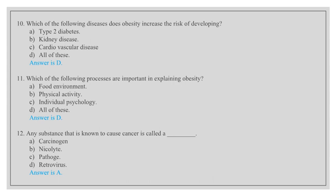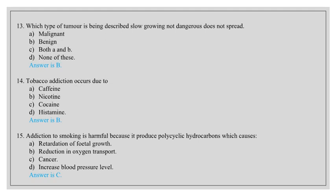Any substance that is known to cause cancer is called: carcinogen, nicolite, pathage, retrovirus. Answer is A, carcinogen. Which type of tumor is being described: slow growing, not dangerous, does not spread? Malignant, benign, both A and B, none of these. Answer is B, benign is a slowly growing tumor.